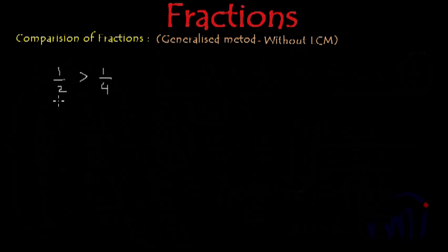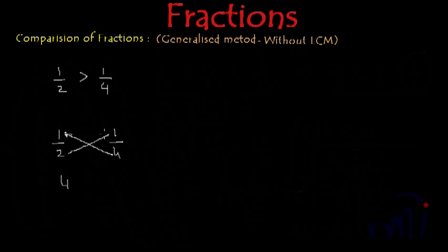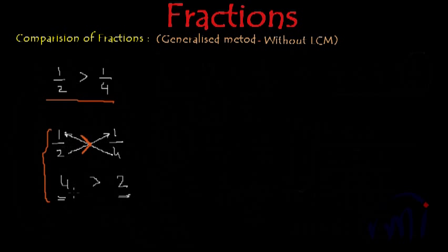In the method I am going to teach you now, we don't find their LCM and we don't convert them into equivalent fractions. What we do is cross multiply their numerators and denominators. I'll multiply this denominator by this numerator and write the result below the fraction whose numerator is being multiplied. So 1 times 4 is 4. Then this denominator gets multiplied with this numerator, giving us 1 times 2 is 2. Here, 4 is larger than 2, and that is why this fraction is larger than the other.